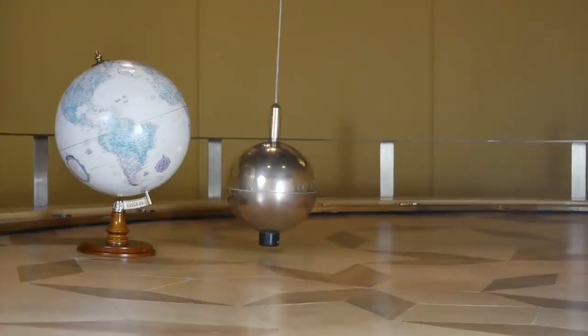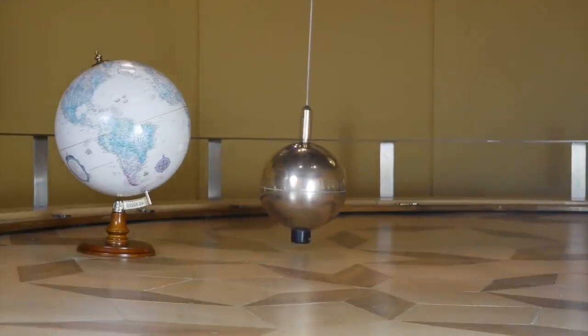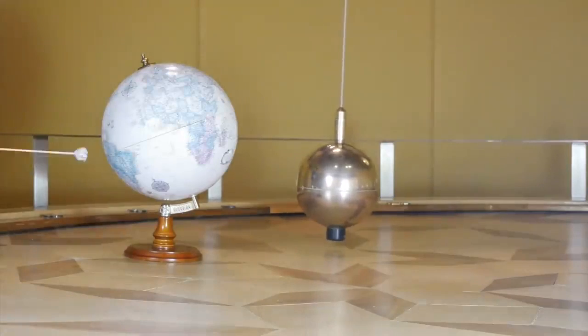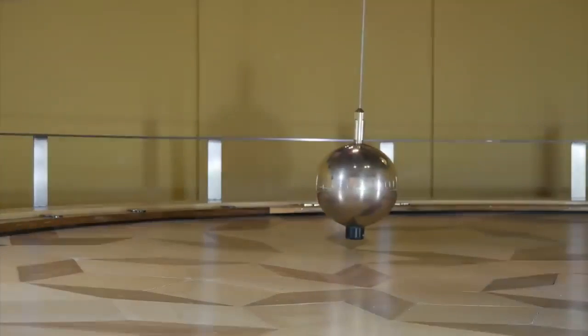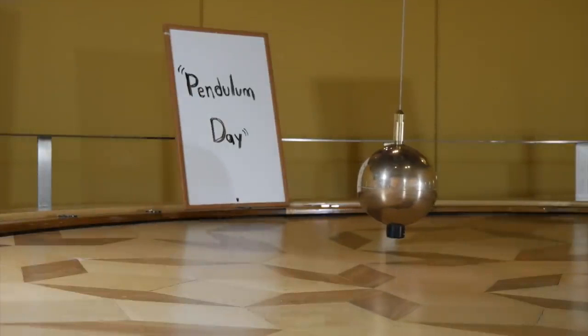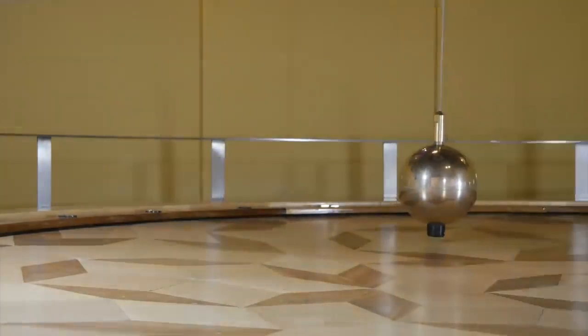But that isn't always the case, because at the poles, the relative rotation between a pendulum and the Earth's axis is at its maximum. So, the closer you move a pendulum towards the equator, the longer it takes for a so-called pendulum day to take place. That's the amount of time it takes for a Foucault pendulum to move around the room, as it were.